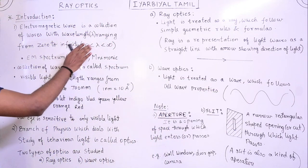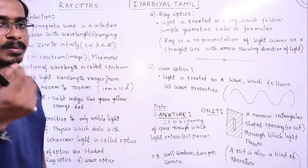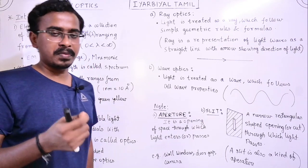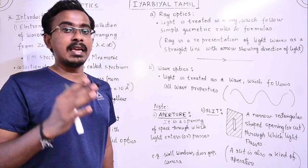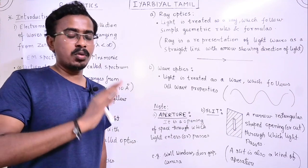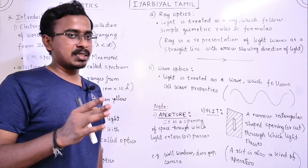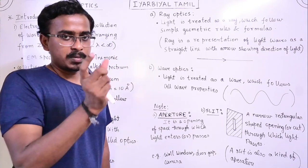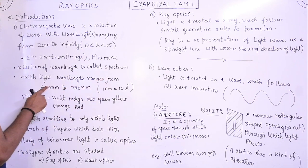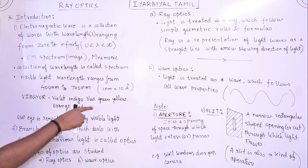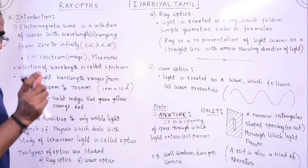Now, the wavelength ranging from zero to infinity is what we call the Electromagnetic Wave. Sometimes they will use the word 'spectrum' — spectrum means a collection of wavelengths. So we call it the Electromagnetic Spectrum. For example, visible light is a small part of the electromagnetic spectrum. The visible region has wavelength ranging from 400 nanometers to 700 nanometers. 1 nanometer equals 10 Angstroms.